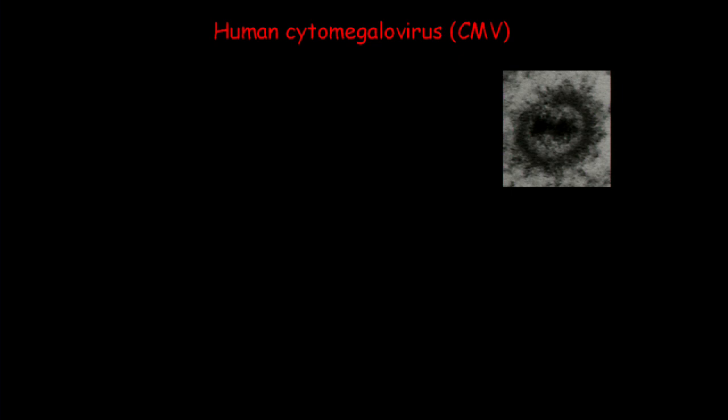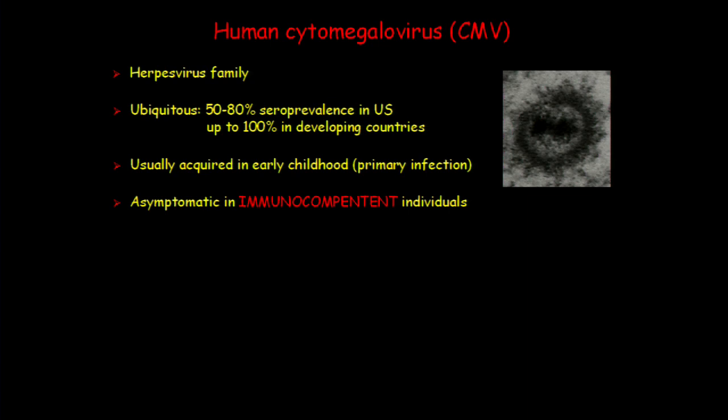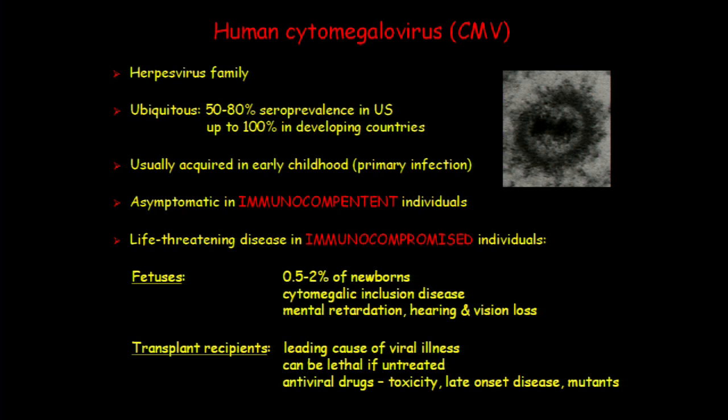CMV is of course a herpesvirus. It's a ubiquitous virus, found in the majority of the population. It is usually acquired in early childhood and it's not a problem for immunocompetent individuals. Most of us might have CMV and we're happy and healthy. But it can be a huge problem for immunocompromised individuals — mostly fetuses and transplant recipients, although also AIDS patients were heavily affected before HAART. In these cases, CMV and in particular CMV tropism can be really life-threatening.